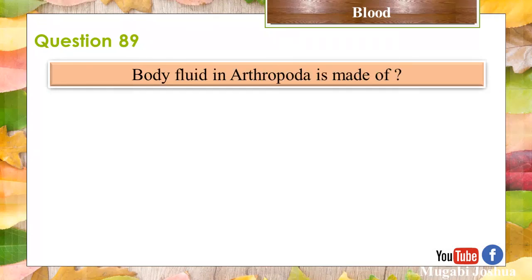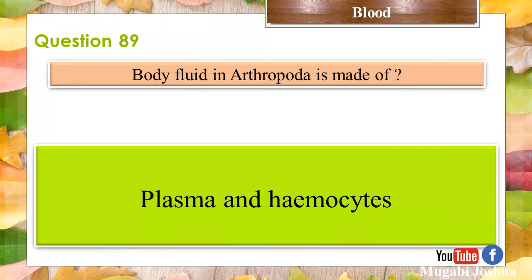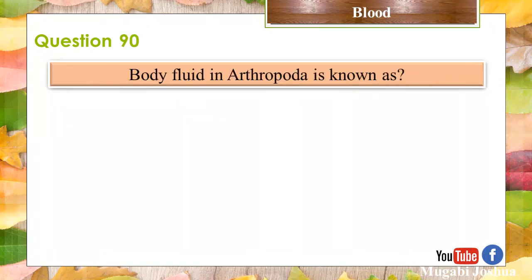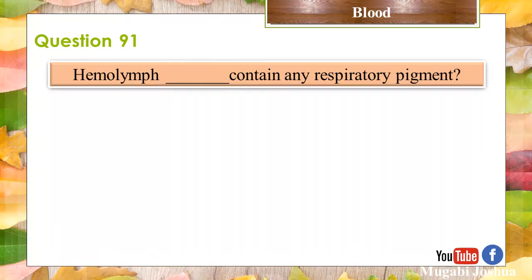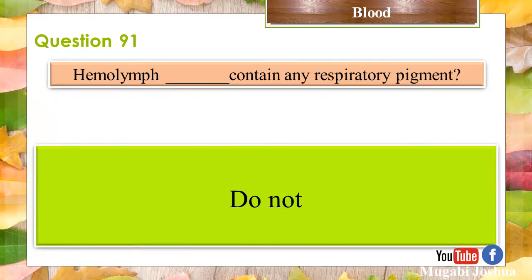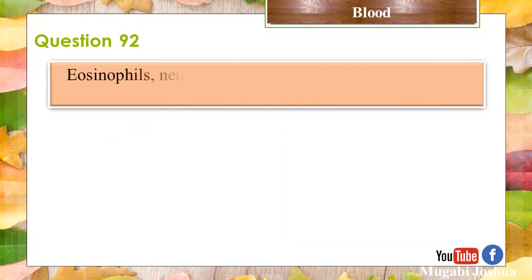Question 89: Body fluid in Arthropoda is made of plasma and hemocytes. Question 90: Blood fluid in Arthropoda is also known as? Hemolymph. Question 91: Hemolymph does not contain any respiratory pigment.